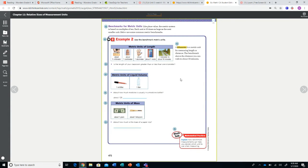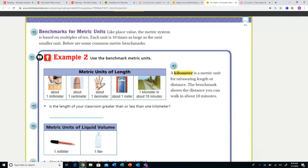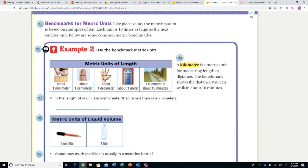All right. So page 472, the second side for examples is going to be the benchmarks for metric units. Now we're not as familiar with these, so there's some good little tricks to remind yourself of what a centimeter, millimeter and things like that look like. So like place value, the metric system is based on multiples of 10. Each unit is 10 times as large as the next smaller unit. Use the benchmark metric units for the example here.